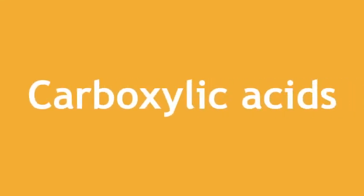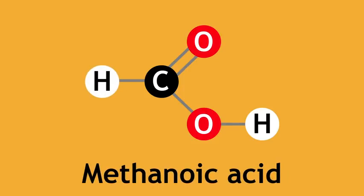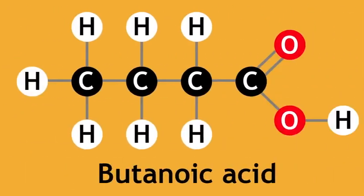Carboxylic acids are another example of a functional group. This is the functional group for a carboxylic acid and gives an organic molecule the name -oic acid. Methanoic acid, ethanoic acid, propanoic acid and butanoic acid.